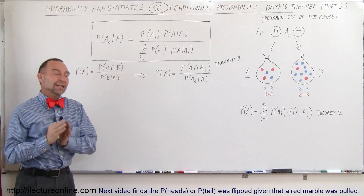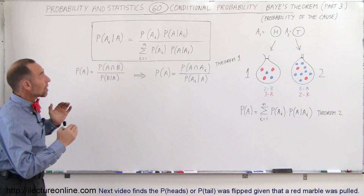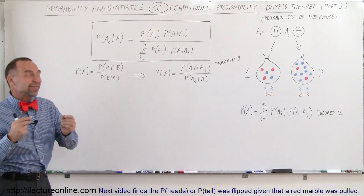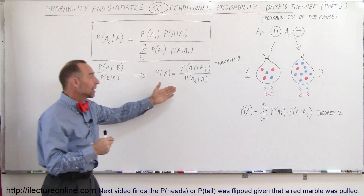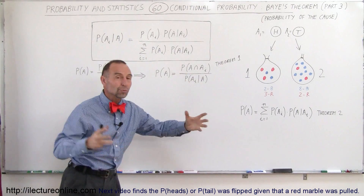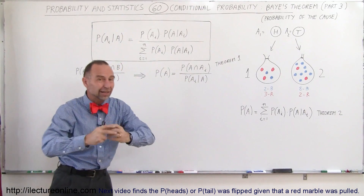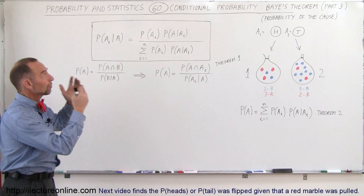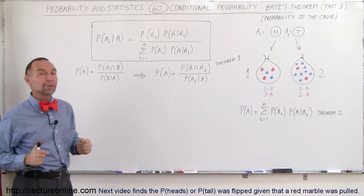Welcome to ElectronLine. Now we're going to show you how Bayes' theorem is nothing more than Theorem 1 and Theorem 2 of conditional probability put together.